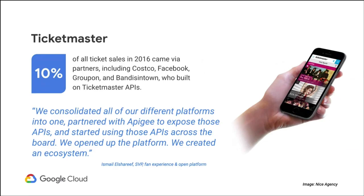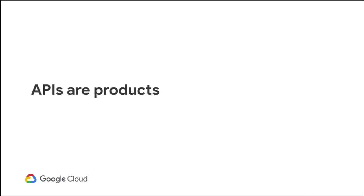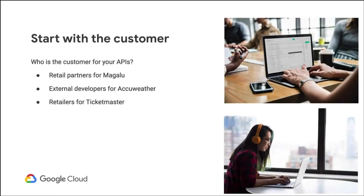One more example is Ticketmaster. They have a mobile app and website, but they also offer APIs that allow third parties to transact business and buy tickets on Ticketmaster. In 2016, 10% of their ticket sales came from those partners — some are things like Costco. There are other aspects where people have integrated Ticketmaster into apps. For instance, if you just bought plane tickets to New York, a travel app can use the Ticketmaster API to offer you show tickets — like Harry Potter and the Cursed Child — directly integrated without jumping to a different digital experience.